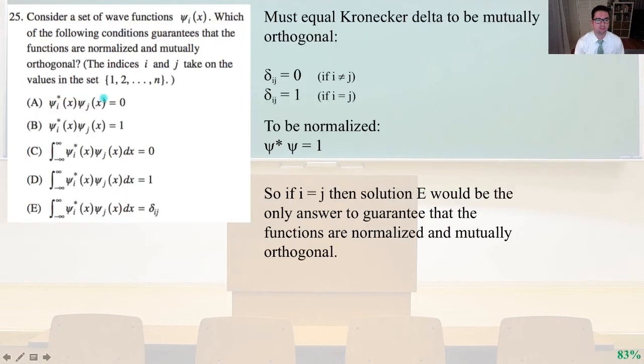Problem 25. Consider a set of wave functions psi of X. Which of the following conditions guarantees that the functions are normalized and mutually orthogonal? The indices I and J take on the values in the set 1, 2, dot, dot, dot, N. Must equal Kronecker delta to be mutually orthogonal. Delta IJ equals 0 if I does not equal J. And delta IJ equals 1 if I equals J. And then, the other criteria is to be normalized, we have to have psi star psi equals 1. If I equals J, then solution E would be the only answer to guarantee that the functions are normalized and mutually orthogonal. IJ equals 1. We need it to equal 1. This is to be normalized. And it also satisfies the Kronecker delta. That is answer E.